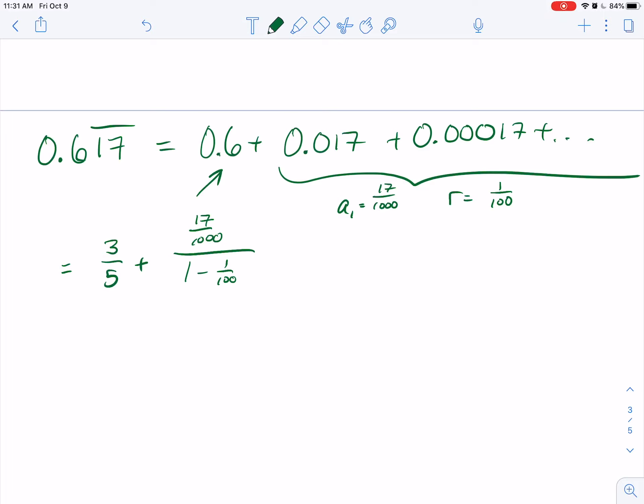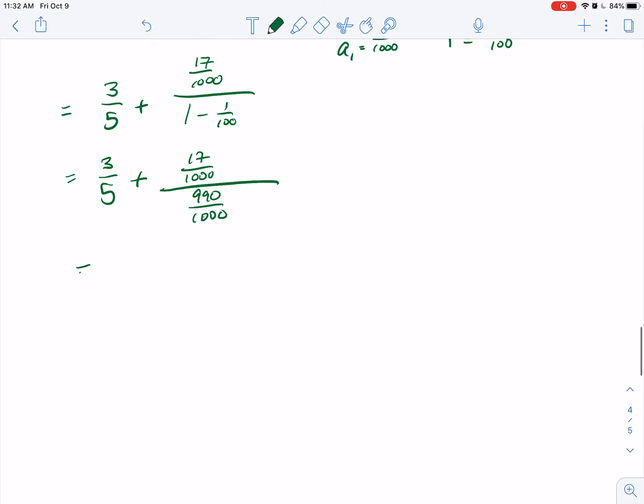So this equals 3 fifths plus 17 over 1000. Let's get a common denominator in the bottom. This becomes 99 over 100, which is 990 over 1000. So we need 3 fifths plus 17 over 990.